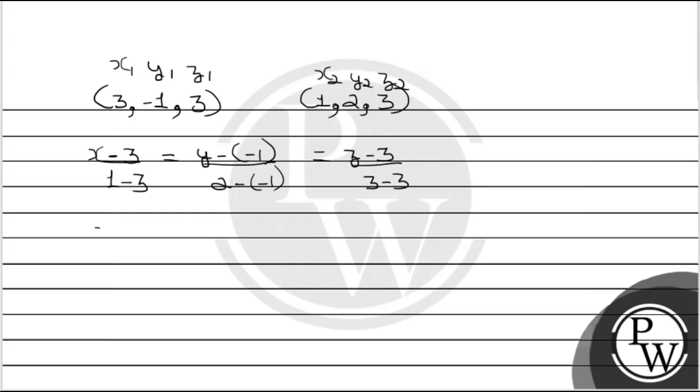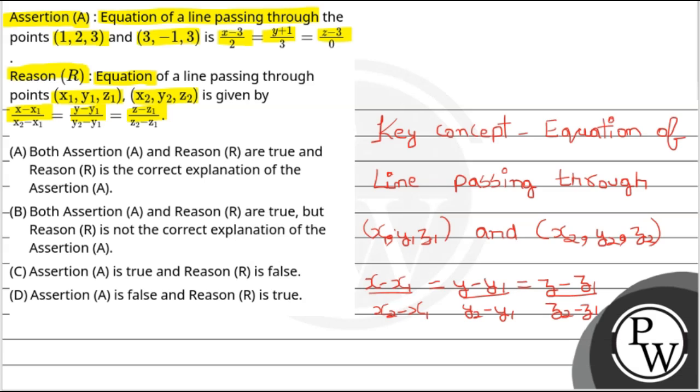Simplifying, we get (x-3)/(-2) = (y+1)/3 = (z-3)/0. This is the equation of the line passing through (3,-1,3) and (1,2,3). Looking at the options carefully, option D is correct because our equation differs from the assertion given, but the reason is correct. I hope you understood it well, thank you.